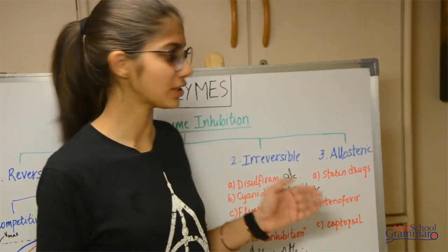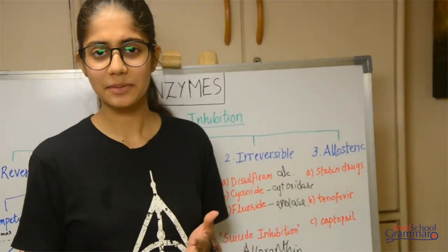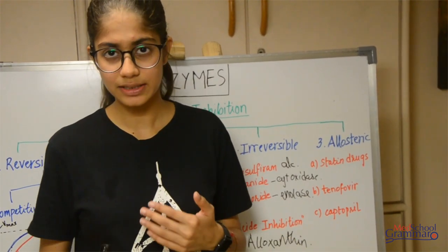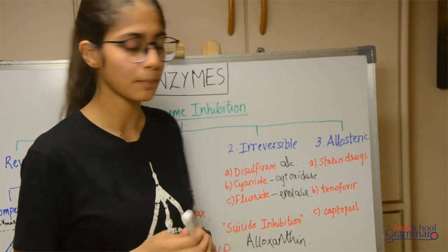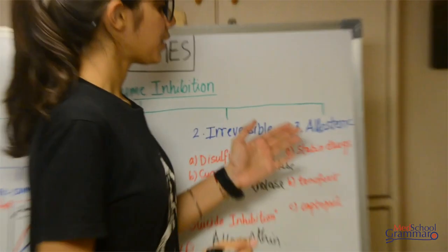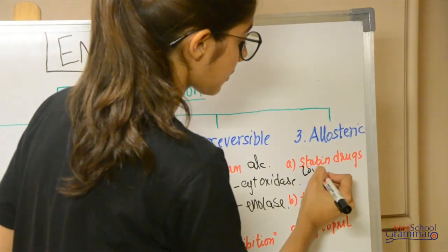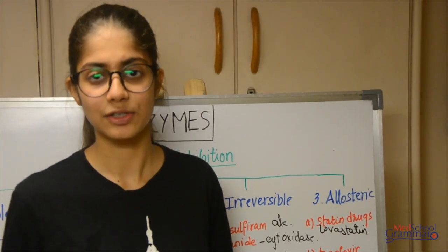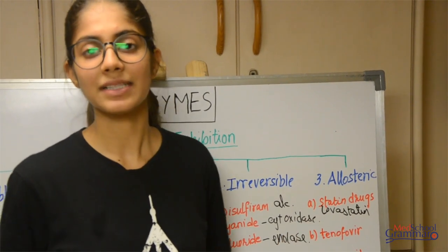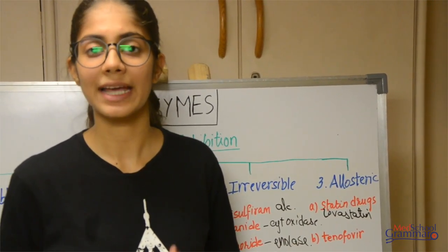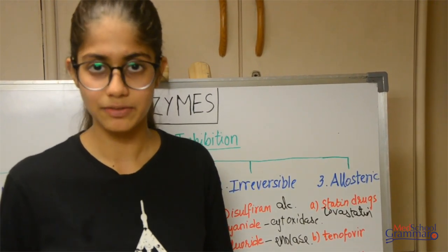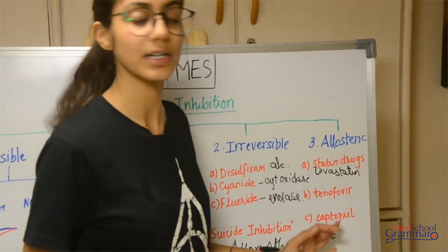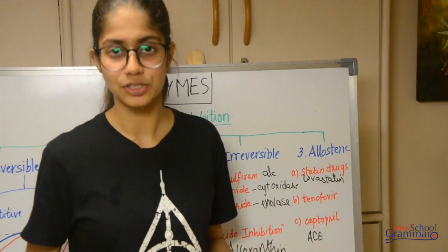Let's move on to our third type of enzyme inhibition, that is allosteric inhibition. Allosteric inhibition basically means that the inhibitor binds at an allosteric site — a site other than the active site — and that causes inhibition. It is a non-covalent, reversible bond. Examples of allosteric inhibition include statin drugs, for example lovastatin, which inhibits HMG-CoA reductase enzyme and is used to decrease cholesterol levels. Then we have tenofovir, which inhibits reverse transcriptase enzyme and is used against HIV to prevent multiplication of the virus. Then we have captopril, which inhibits the enzyme ACE — angiotensin converting enzyme — and is used as a treatment for hypertension.